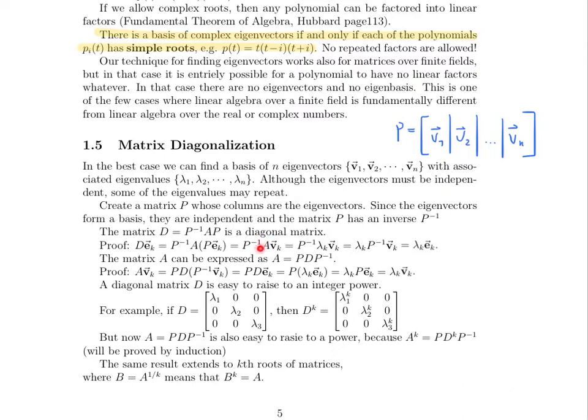Now note that v sub k is an eigenvector of the matrix A. So A acting on v sub k will give us lambda k, where lambda k is the eigenvalue associated with the eigenvector v sub k. Lambda k is just a scalar, so that can be factored out. We have now P inverse v sub k. And note that what P did was that it took a standard basis vector, the kth standard basis vector, and mapped it to the kth eigenvector, P inverse is going to go backwards. It's going to go from the kth eigenvector and return the kth standard basis vector. So at the very end, we have lambda k times E sub k,